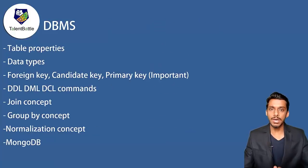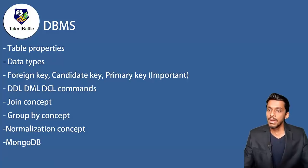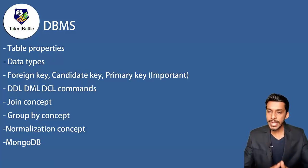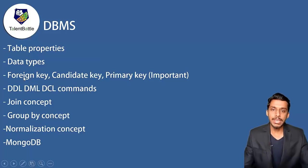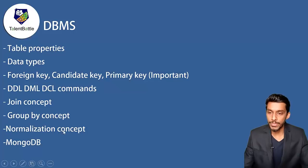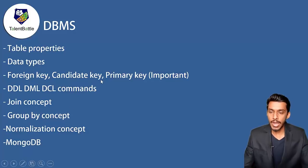For DBMS, the level of difficulty is moderate — two questions can be difficult but the remaining seven to eight are moderate. The qualifying round is not going to be very easy. The main concepts required are table properties, data types, foreign key, candidate key, and primary key — these I've termed as important because more than one question was asked on them. There are also individual questions on DDL, DML, DCL commands, join concept, group by, normalization, and some questions on MongoDB. When preparing for DBMS from a vast syllabus, at least focus on these topics to start.